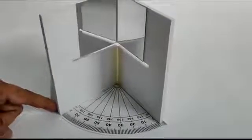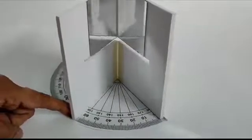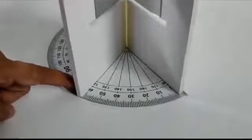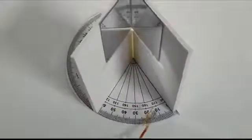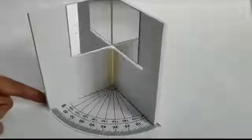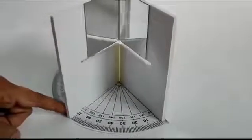Now let's go for the third set of observations. First, measure the angle between the mirrors and note it down in the observation table.